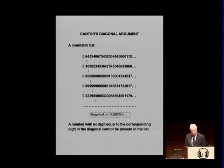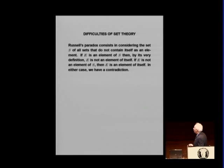Now, if I take a number with no digit equal to the corresponding digit in the diagonal, then this number cannot be present in the list. Which means, the decimal numbers, or if you want, an interval cannot be counted. So, that was really a big revolution.